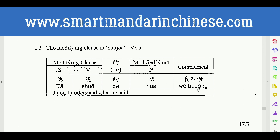Before you jump into the sentence structure, you should be able to understand the vocabulary in the sentence. First of all, you should know what is 说话. So let me show it for you. 说话 — so what is 说话? 说话 means 'to speak.'